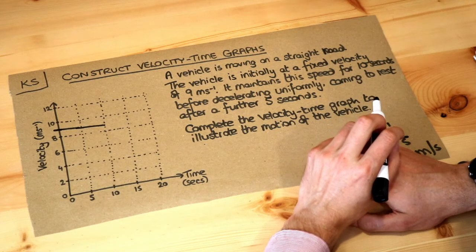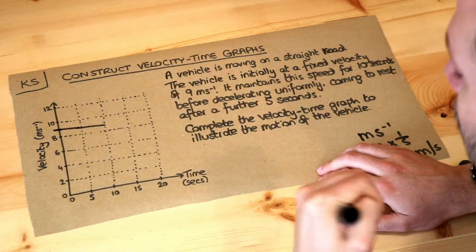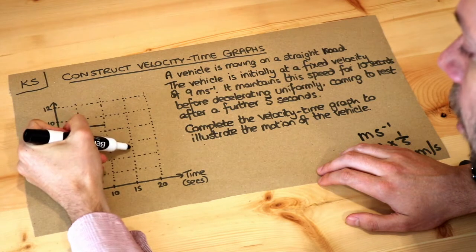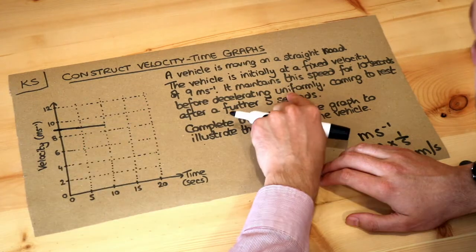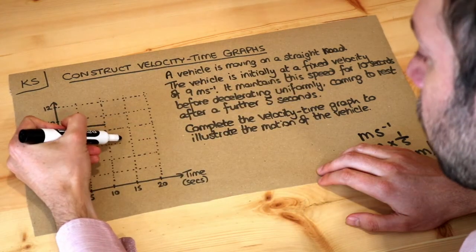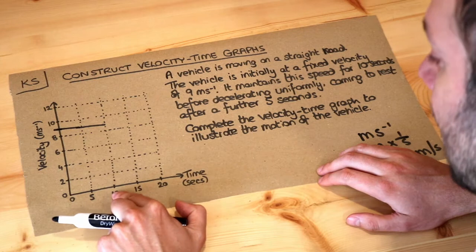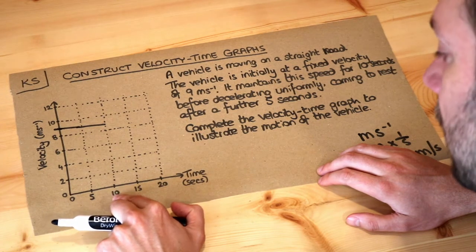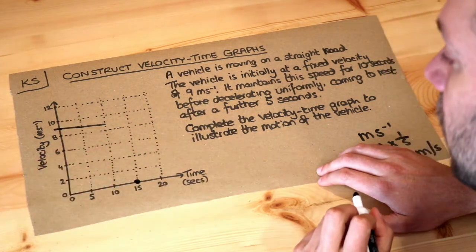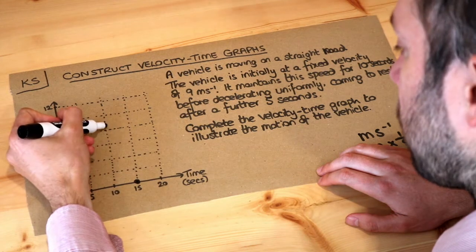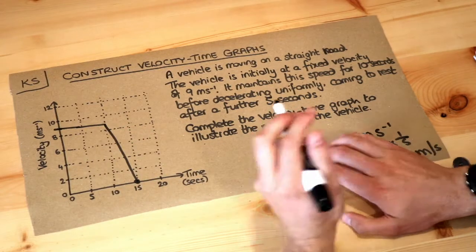It then decelerates uniformly. Decelerates means to slow down, and uniformly means it's slowing down at the same rate, which will result in a straight line going downhill. The speed is decreasing, and because it's decelerating uniformly that downhill line will be straight. It comes to rest after a further 5 seconds — currently at 10 seconds, so it reaches rest at the 15-second mark. At 15 seconds our velocity will be zero, and we draw a straight line connecting the two points to show we're decelerating from here to here. And that is the final answer.